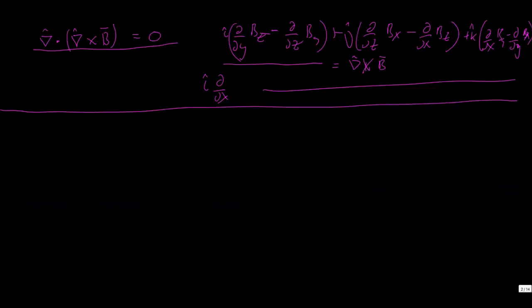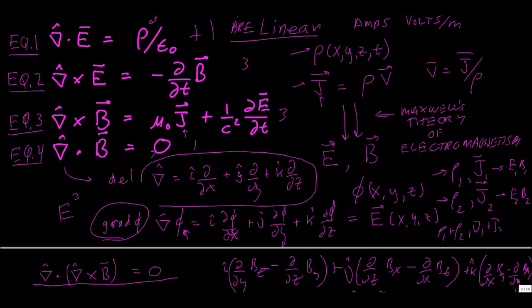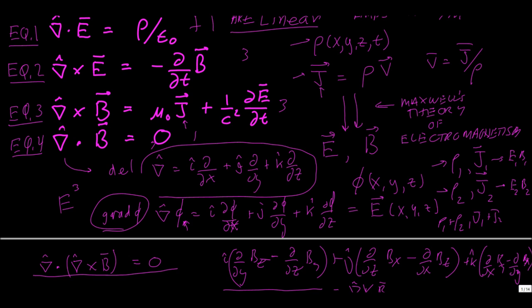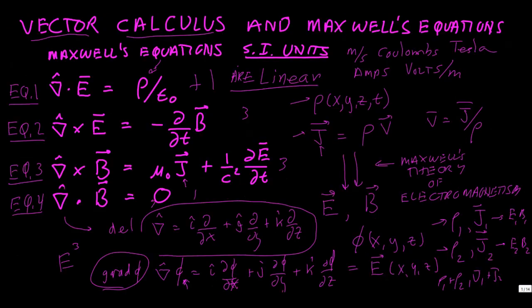Now let's take the divergence of equation three for the curl of B. By the way, if you're a physics student, it's a good idea to memorize these four equations in SI units. Your electronic instruments are calibrated in volts and amps, though magnetic fields are often given in Gaussian units — one Gauss equals 10 to the minus 4 Tesla.